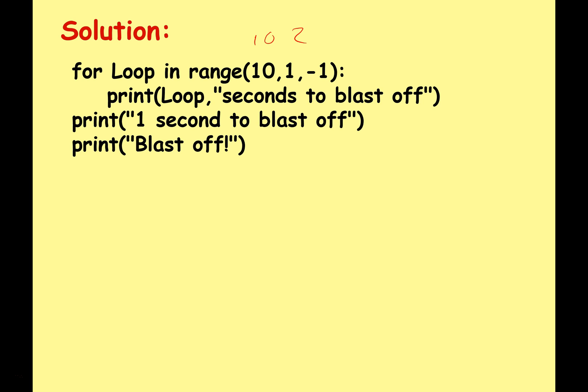And of course it's a countdown timer, so we're doing that in steps of minus 1. 10 to 1 in steps of minus 1. Print loop seconds to blast off, and then we're going to say print one second to blast off and blast off, and these you can see are outside the loop.